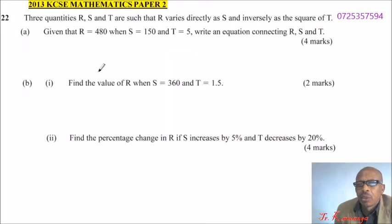This is question number 22, 2013 KCSE Mathematics Paper 2. We are told three quantities R, S, and T are such that R varies directly as S and inversely as the square of T. Given that R equals 480 when S equals 150 and T equals 5, write an equation connecting R, S, and T.